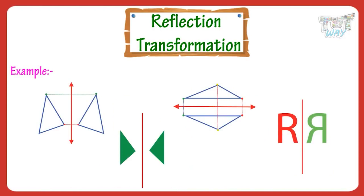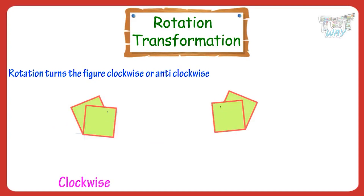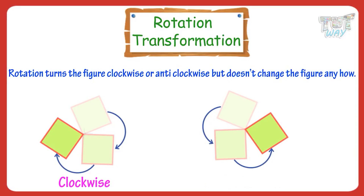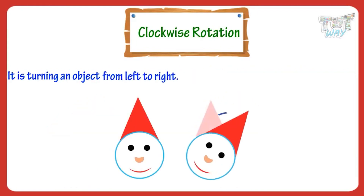Now let's learn another type of transformation. It is rotation. Rotation turns the figure clockwise or anticlockwise but doesn't change the figure anyhow. That is, the shape and size of the image are not changed. It is turning an object from left to right, which is called turning clockwise.